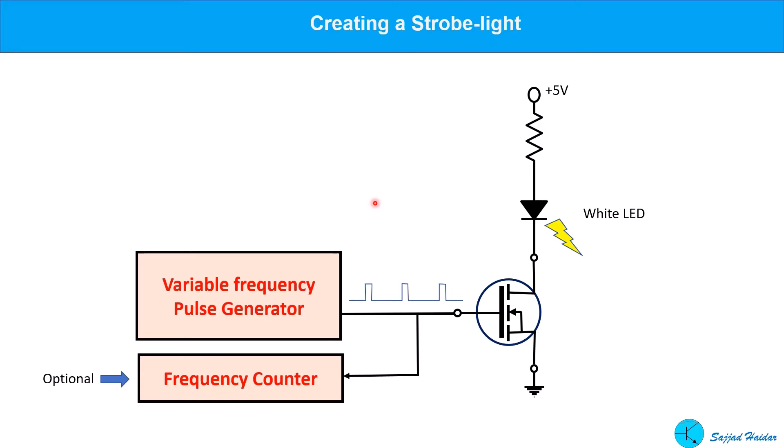We can easily create a strobe light. We can use a high-power white LED as a light source. And to drive the LED, we can use a MOSFET whose gate is supplied by a series of pulses from a variable frequency pulse generator.